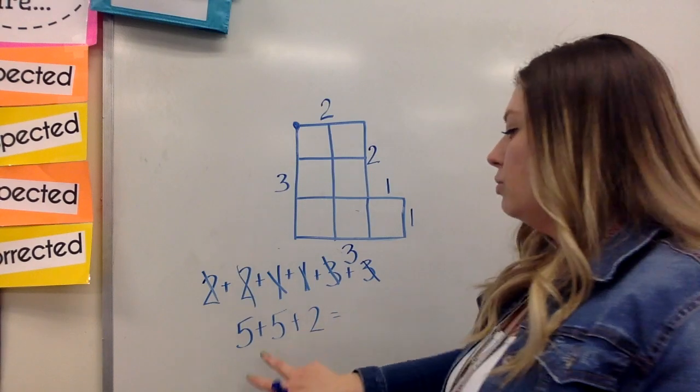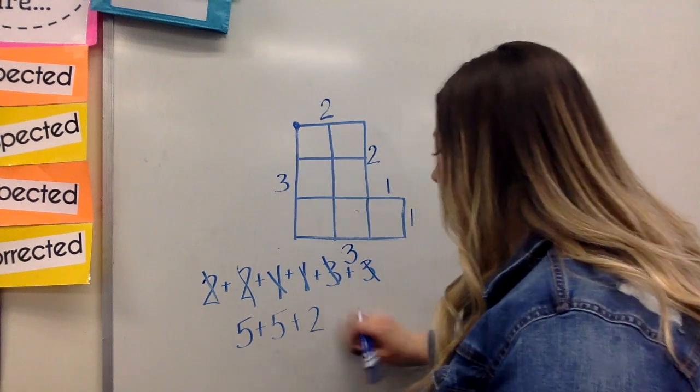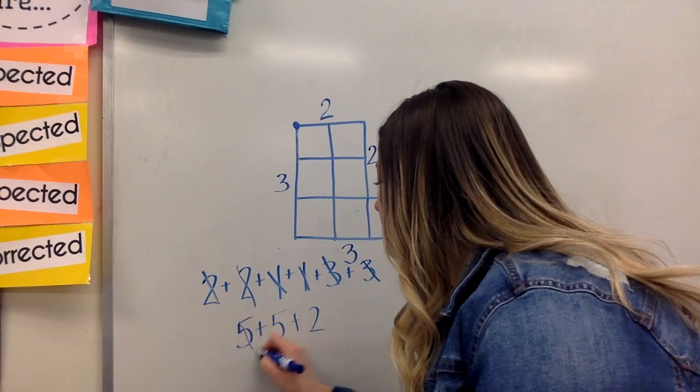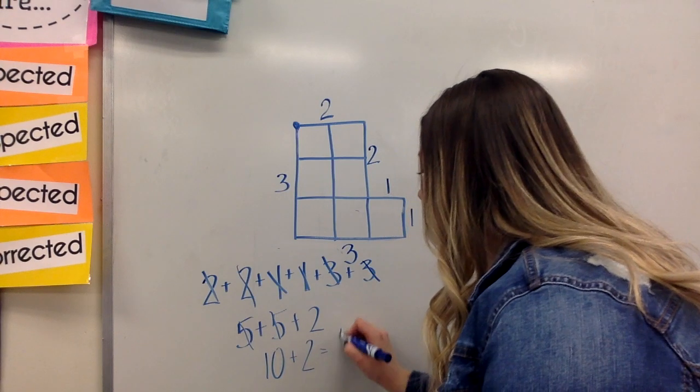So when I add this up, I know two fives make a ten, and ten plus two is twelve, so if I drew it out a little more, it would be these two are ten, plus two equals twelve.